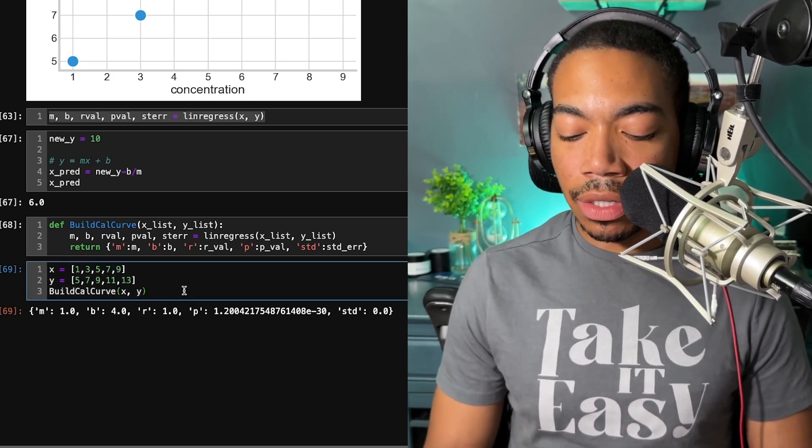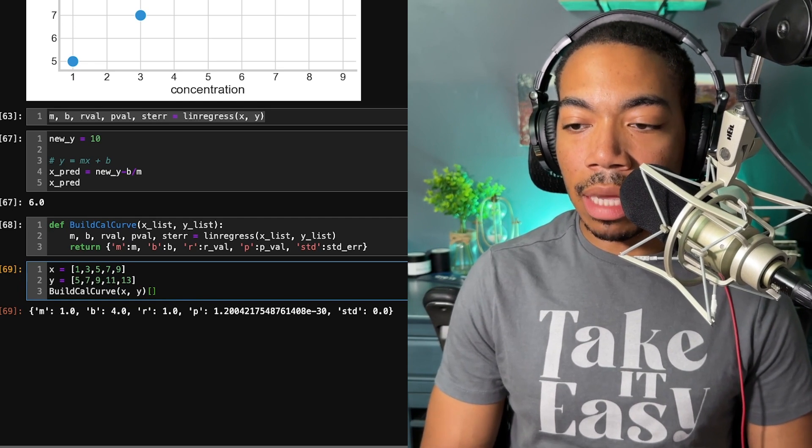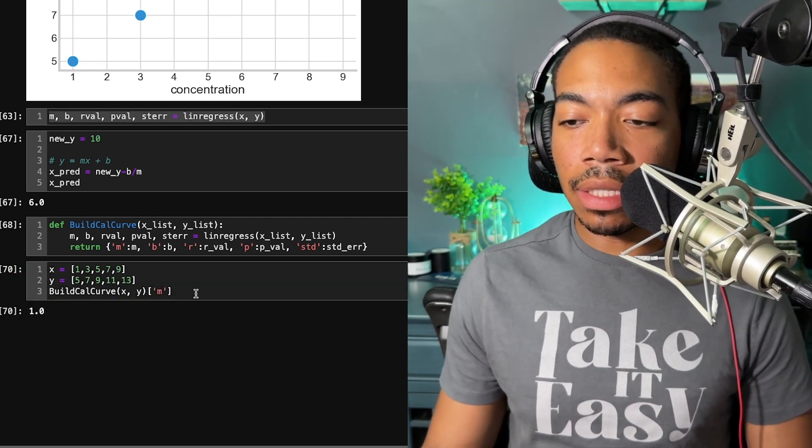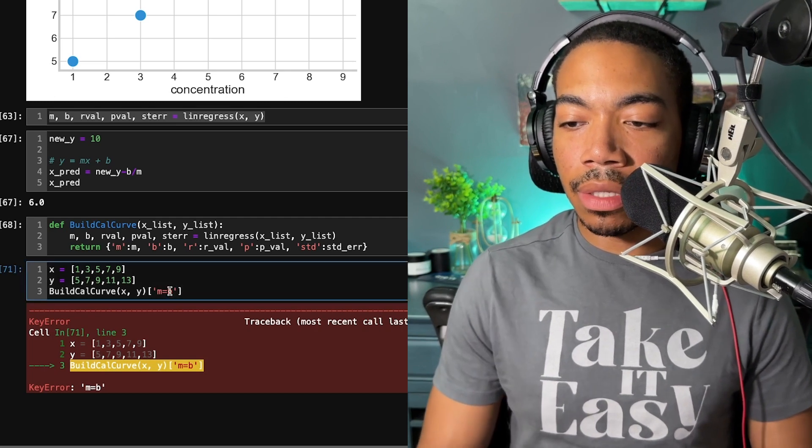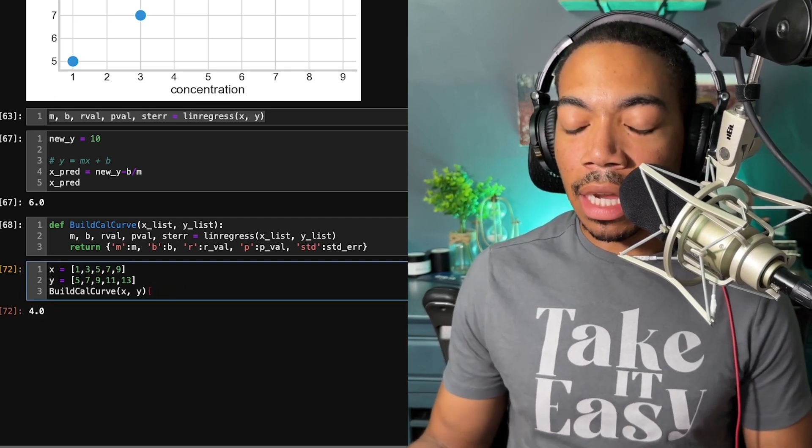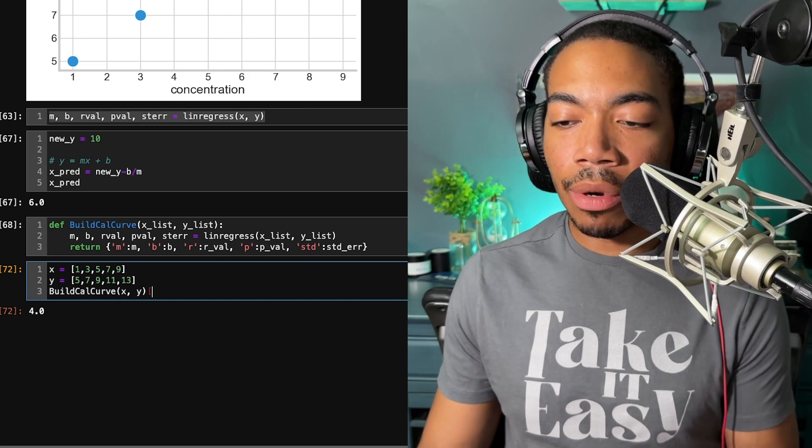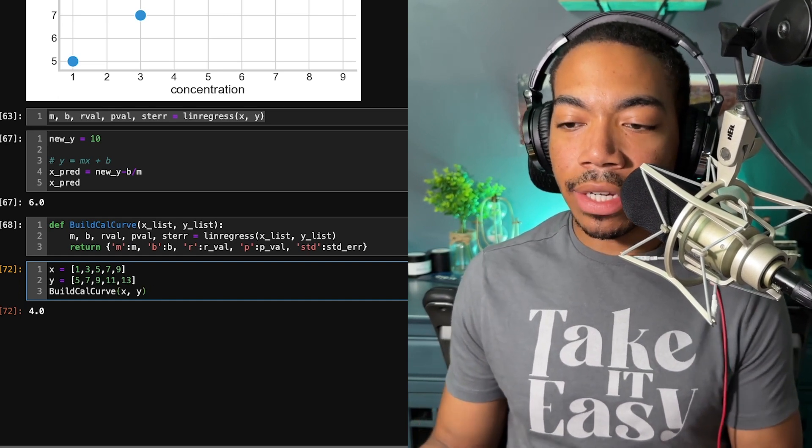If we take advantage of this, the structure allows us to look at just m. So this dictionary has various keys that are consistent with the values that they represent. And let's now make a second function that will take this calibration curve parameters and actually solve for x.